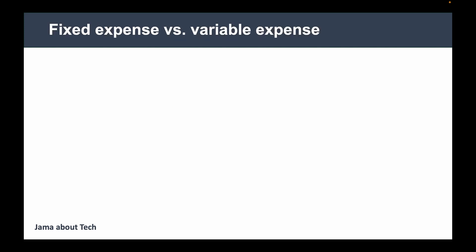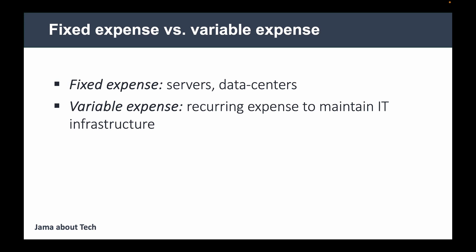When we talk about fixed expenses versus variable expenses, let's understand the difference. Fixed expense is the expense for long-term assets — machinery, land, equipment, and in our case, servers and data centers. Variable expenses are recurring expenses to maintain your IT infrastructure, incurred every month or every year. These types of expenses are also referred to as CAPEX and OPEX, where CAPEX stands for capital expense and OPEX for operational expense.